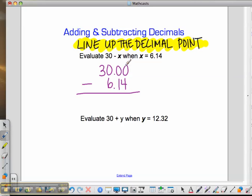Therefore, you need to fill in these placeholders, zeros as placeholders. I can't do 0 minus 4, so I need to come over and borrow from the 3 in the tens place. This becomes 9, this becomes 9, and this becomes 10.